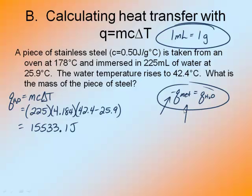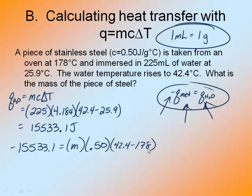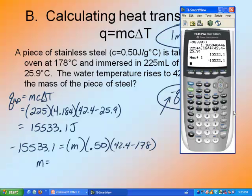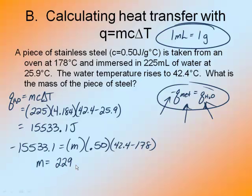So again we go back to this fact right here. I flip the sign. Negative 15533.1 is equal to my mass of my steel, which is what I'm looking for, times the specific heat which is 0.50 times the temperature change. It ends at the same temperature, it started at 178. Flip the sign by multiplying by negative 1, and then divide by everything on the right-hand side: 0.5 times 42.4 minus 178. Again, parentheses are your friend. And I get 229.1. So 229 grams is the mass of that piece of steel. Big piece of steel, 229 grams. But decent-sized amount of water too, 225 milliliters of water.